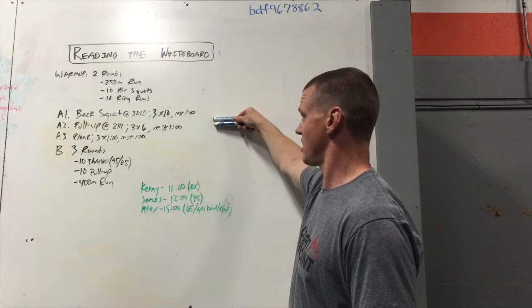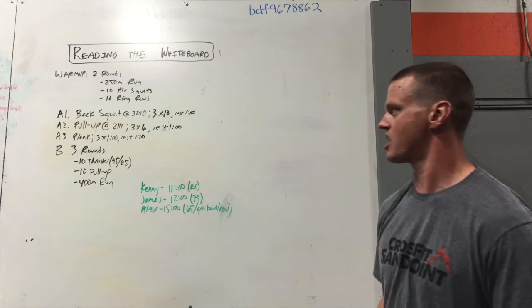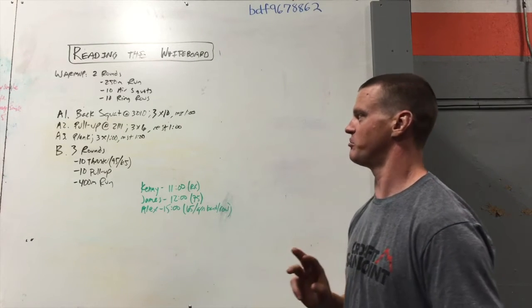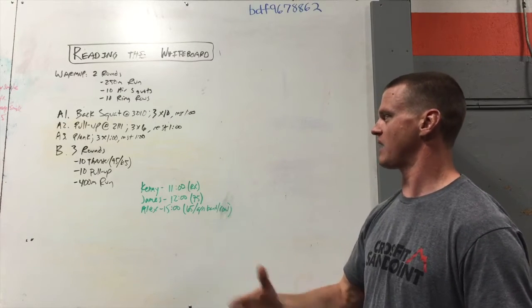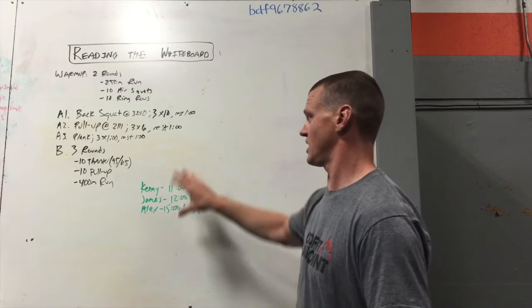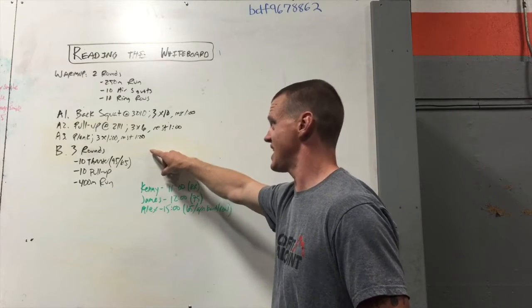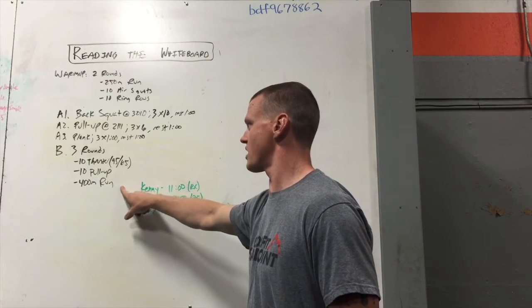Then generally in our gym, the A work is corresponding to the strength or skill work for the day, and the B work, or the final letter, is corresponding with the conditioning work. So in this case, that's B, and that's our conditioning for the day, and that is three rounds of ten thrusters, ten pull-ups, and a 400-meter run.